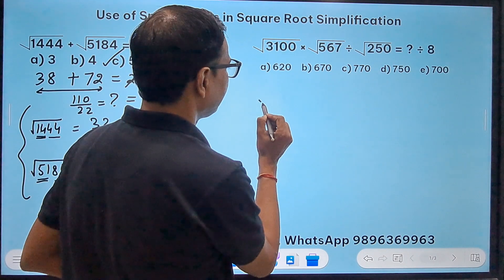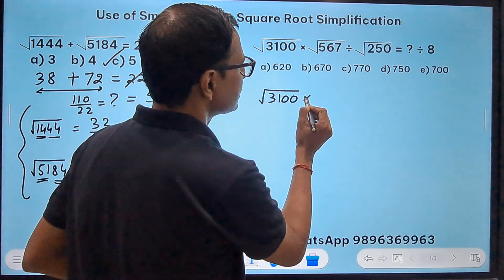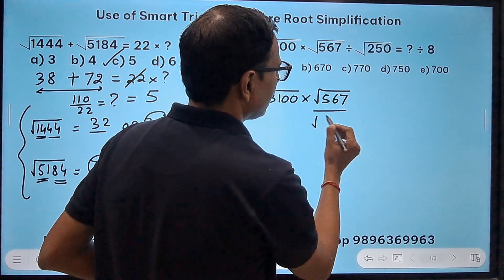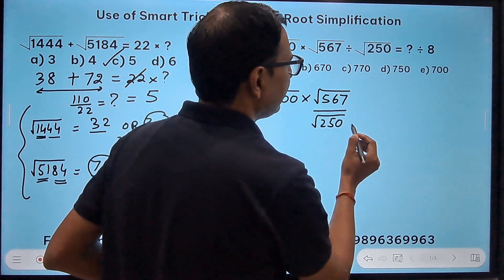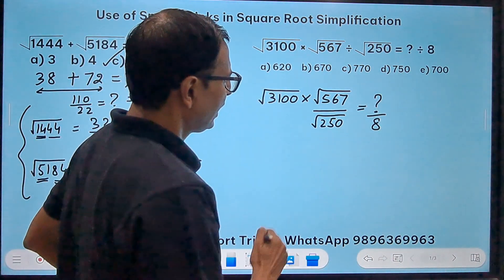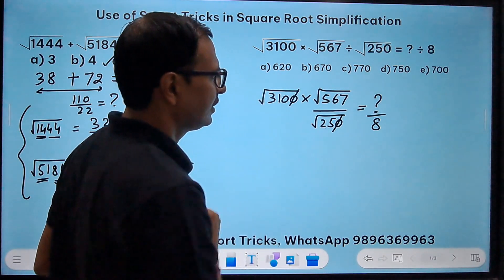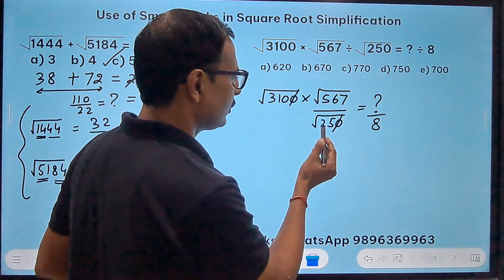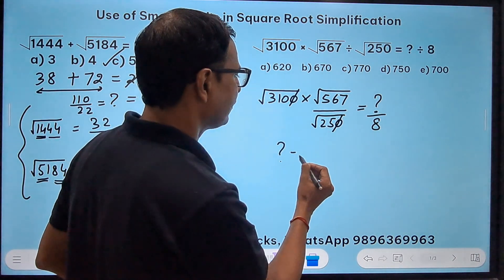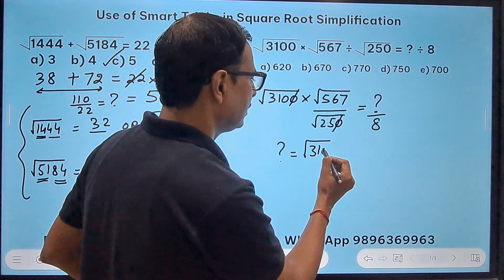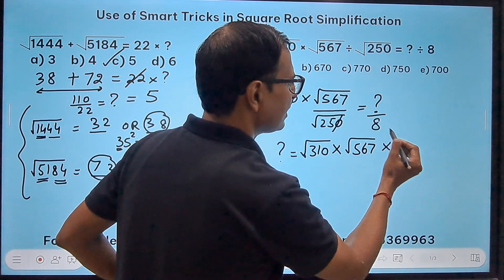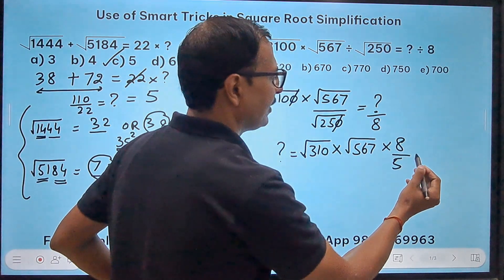So let me try to approximate this question. Here we have square root of 3100 times the square root of 567 divided by the square root of 250. And on the right hand side, you have something divided by 8. Now I think there is a 0 which is getting cancelled here, and square root of 25 is 5. And I can bring the 8 also to the left. So the question mark will be square root of 310 times the square root of 567 times 8, and in the denominator you have 5.